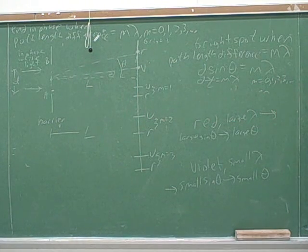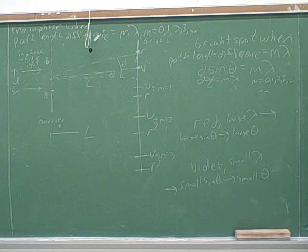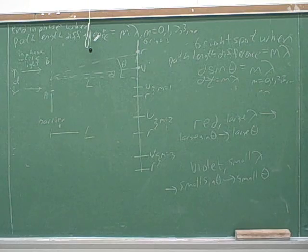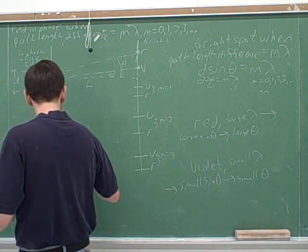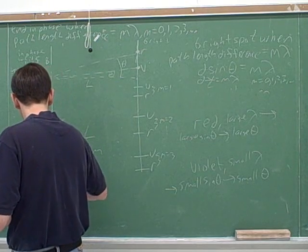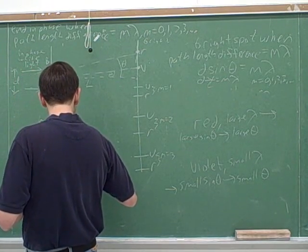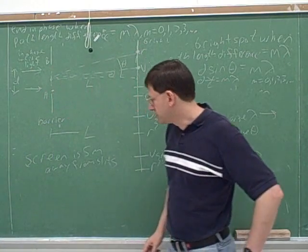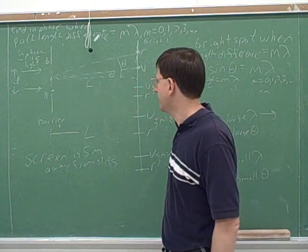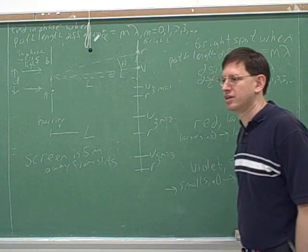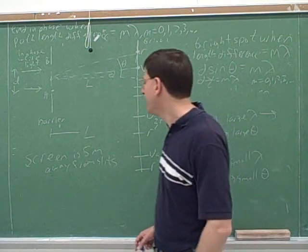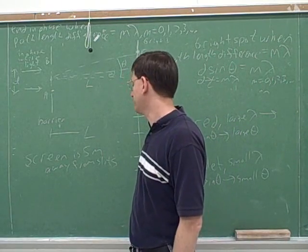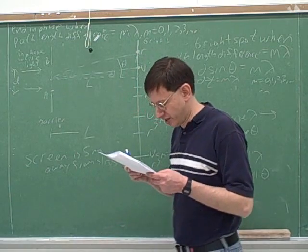So those are the points I wanted to make about colors. Let's do another little problem solving trick. Suppose they tell you in words that the screen is five meters away from the slits. Which variable are they telling you? Y, uh, L. Yeah, not Y, but L. All right. So again, in a lot of problems, the only obstacle is figuring out where to plug in the numbers. So we have to look at the common wording here.